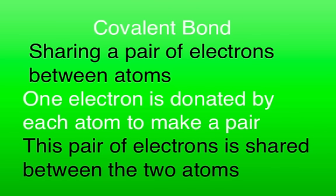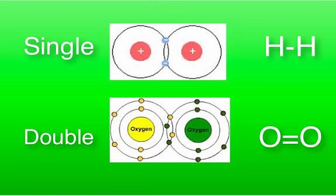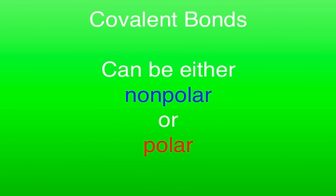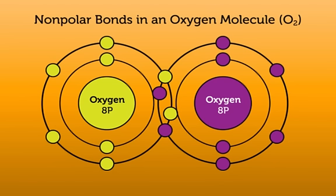Another type of bond is called a covalent bond. This bond involves the sharing of pairs of electrons between atoms — one electron donated by each atom to make a pair. Sharing one pair of electrons is a single covalent bond, and sharing two pairs is a double covalent bond. Covalent bonds can be either nonpolar or polar. Nonpolar covalent bonds involve an equal sharing of electrons because the atoms involved in the bond have an equal pull on the electrons.